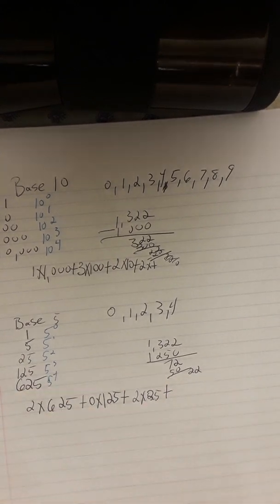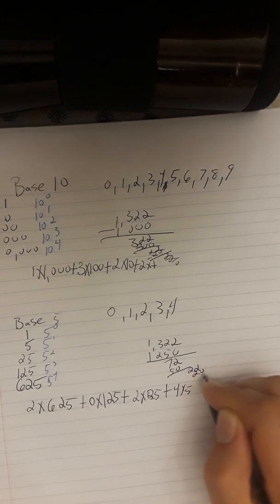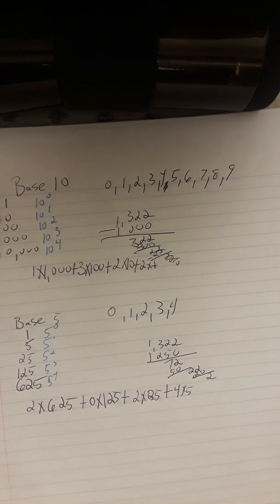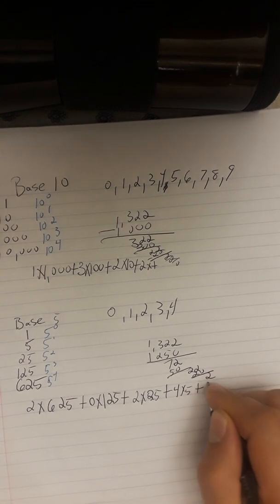Plus, how many 5s go into 22? 4 5s go into 22. So we're going to have 20, and we're going to end up being left with 2. How many 1s go into 2? 2 of them. So plus 2 times 1.